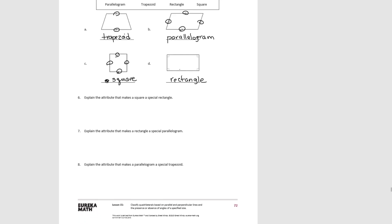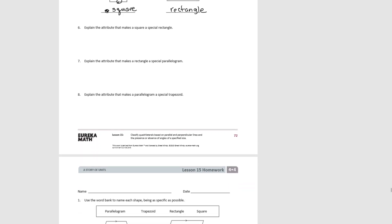Pause the video and try number six. The attribute that makes a square a special rectangle is that all sides are the same length. Try number seven. A rectangle, in addition to having a set of parallel sides, has four right angles.